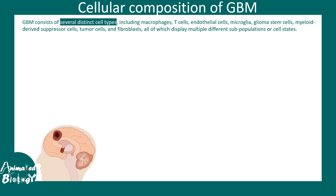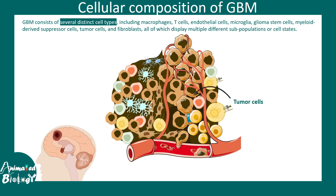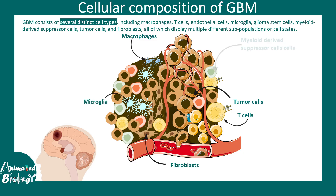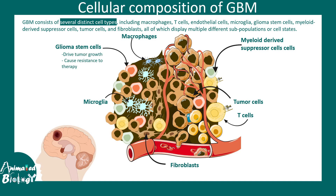Glioblastoma has heterogeneous cell types within the tumor. If you look at the tumor in detail, there could be tumor cells, T-cells, macrophages, microglia, fibroblasts, myeloid-derived suppressor cells, and most importantly, glioma stem cells. These glioma stem cells are what make these tumors so aggressive, because even if radiation and chemotherapy can reduce the tumor size, the glioma stem cells ensure they can produce more tumor cells and regrow the tumor, causing resistance to therapies.